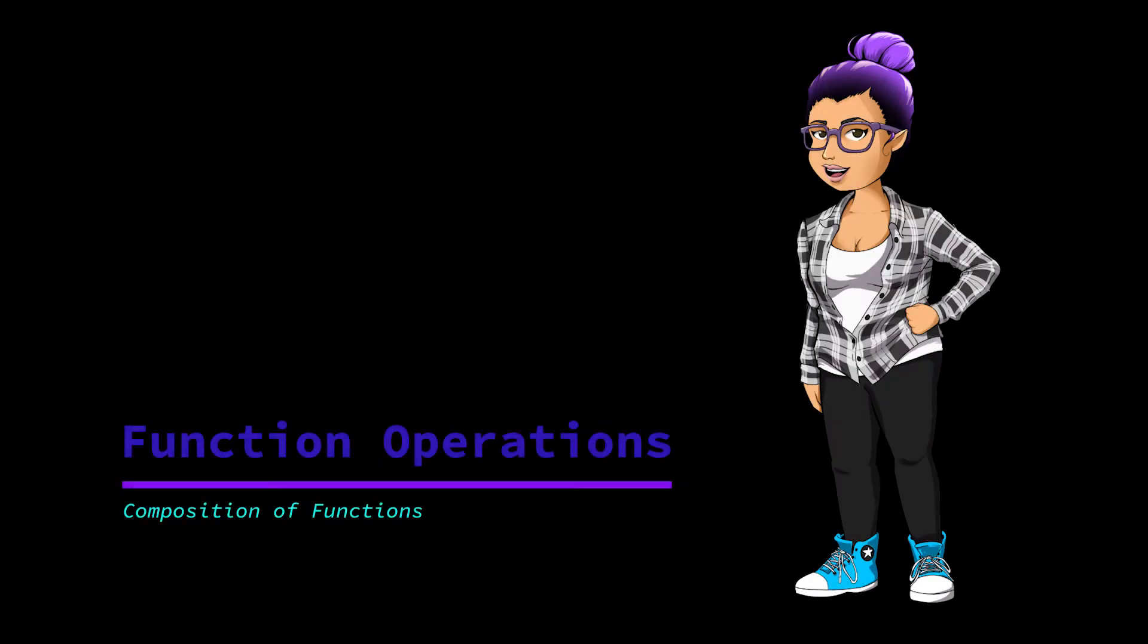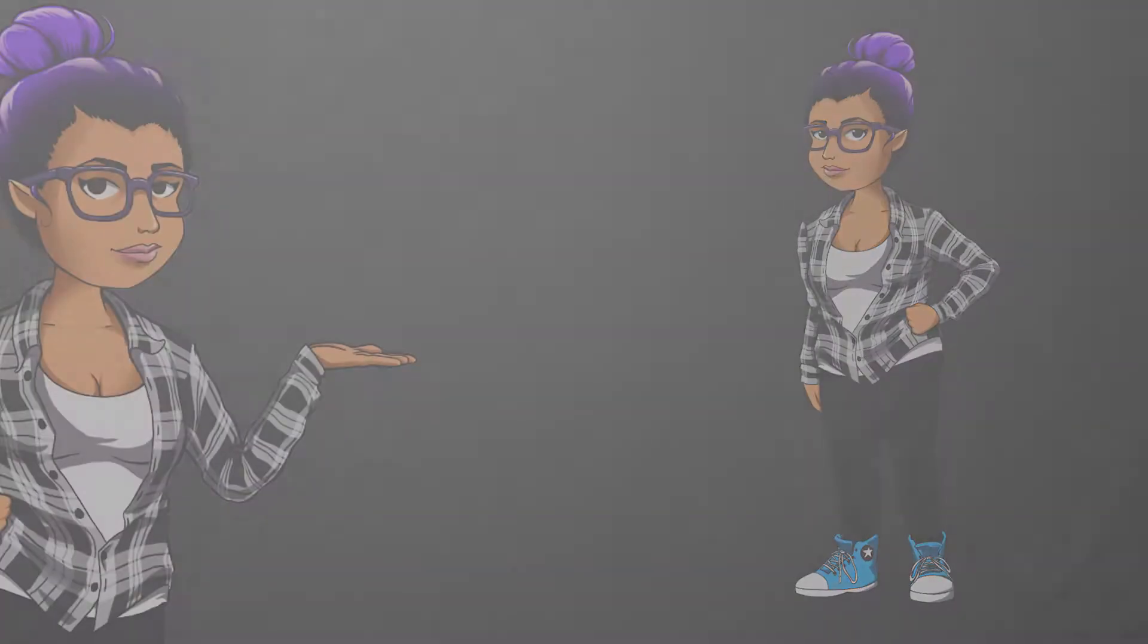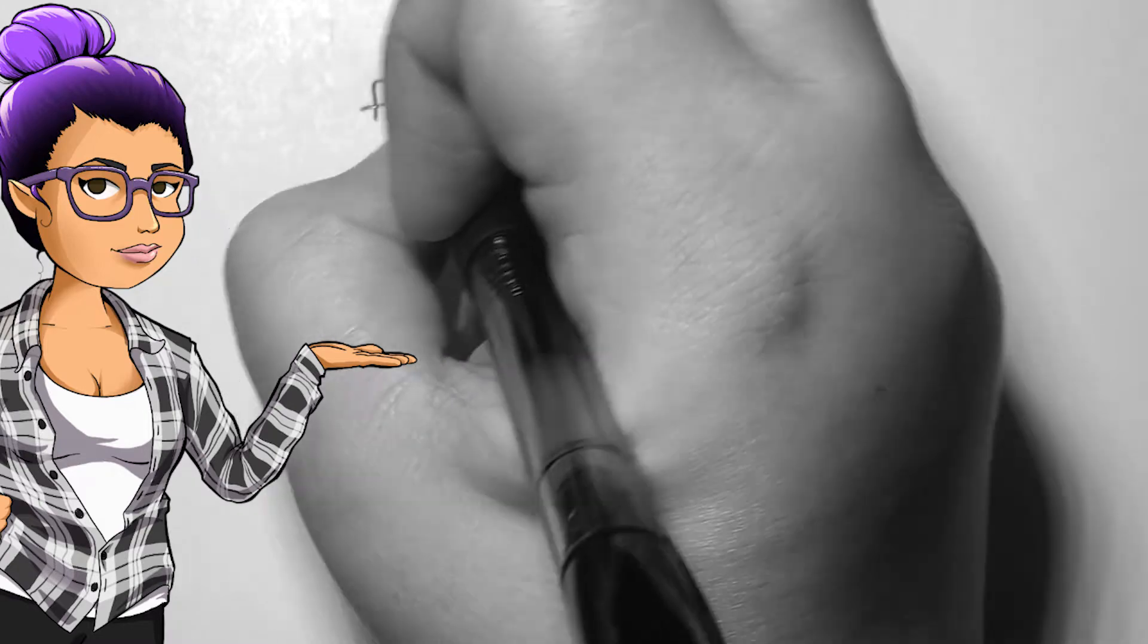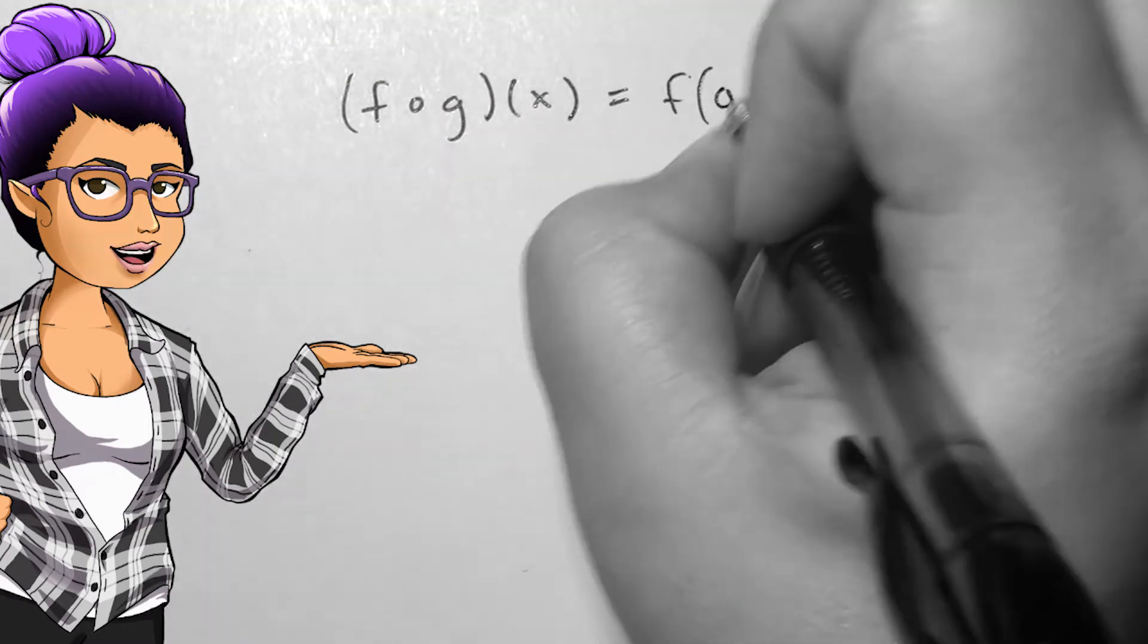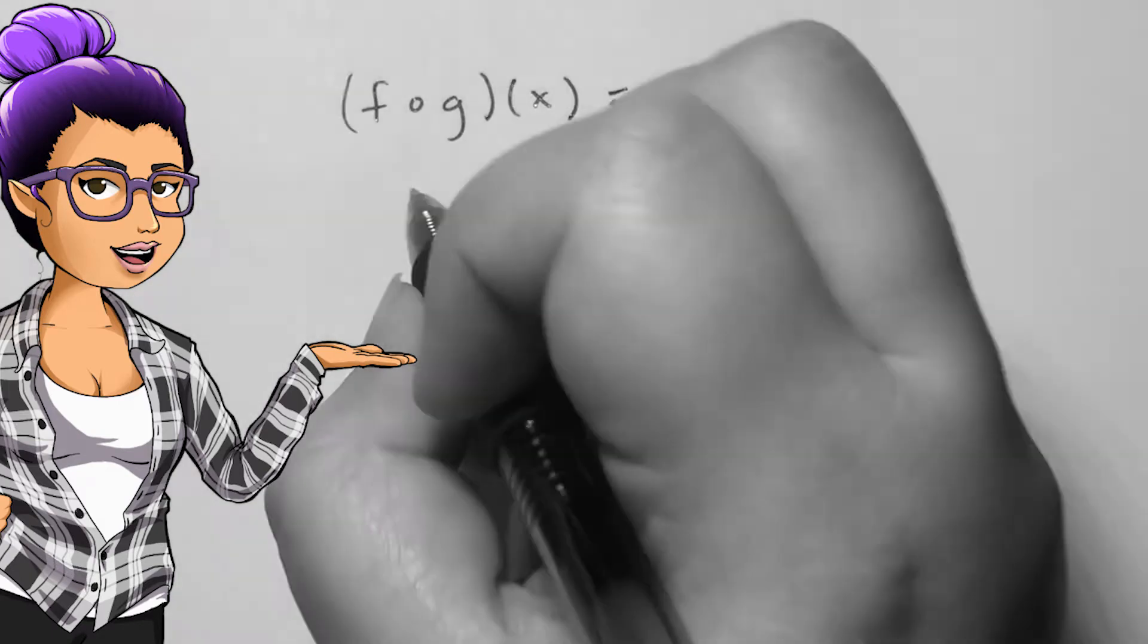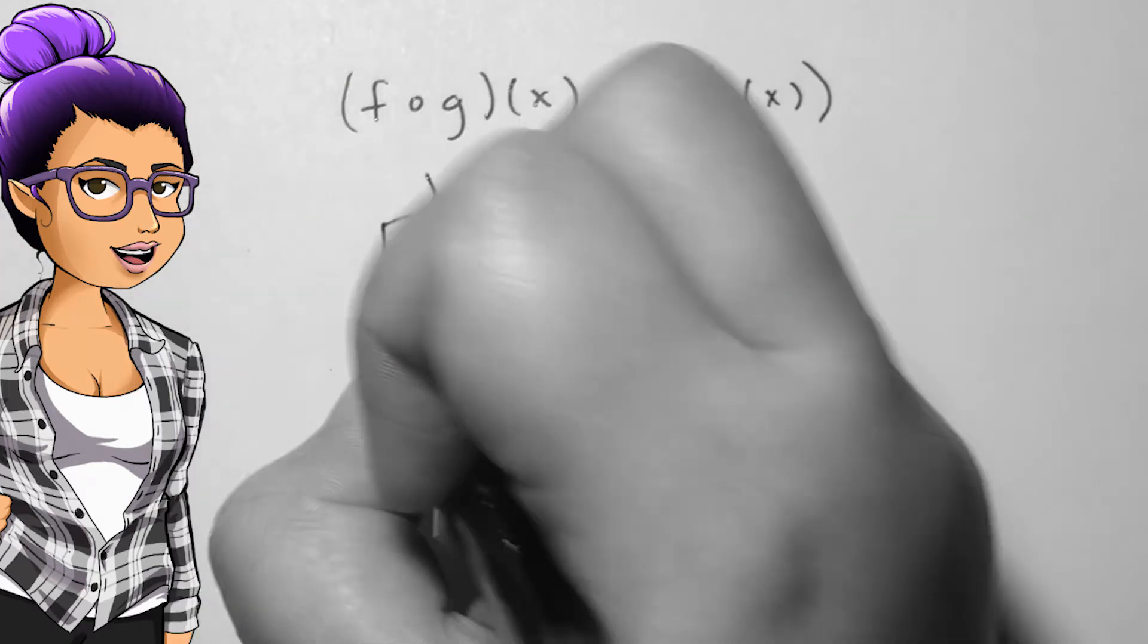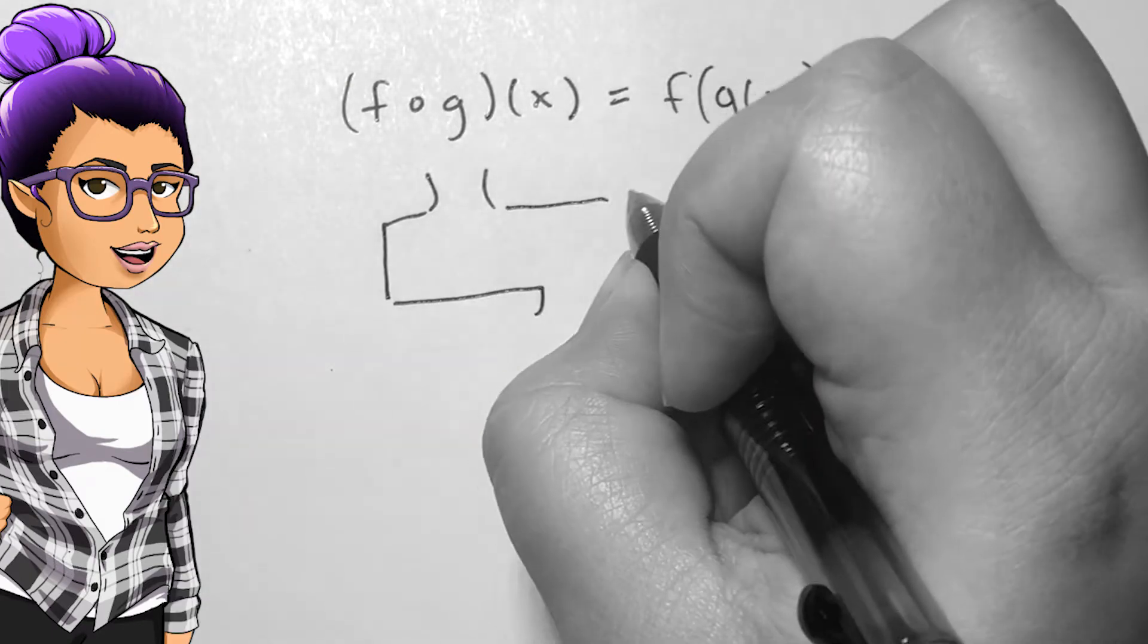Composition of functions. Composition is a process in which the output of one function becomes the input of another. The notation used for composition is either f composed with g evaluated at x or f of g of x. The second is the function notation equivalent of what composition represents.